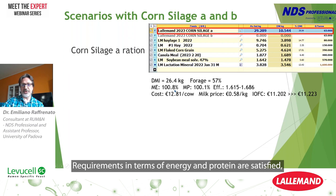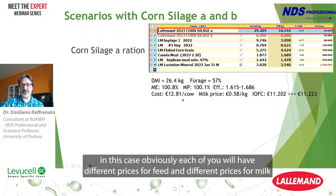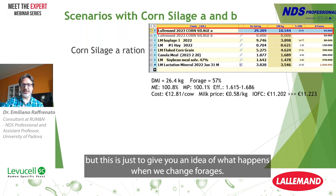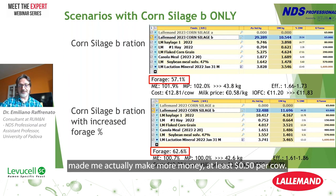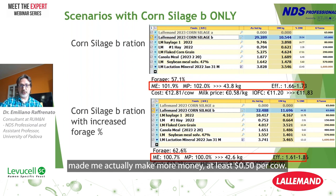Requirements in terms of energy and protein are satisfied. Obviously each of you will have different prices for feeds and a different price for milk, but this is just to give you an idea of what happens when we change forages. The increase of the forage percent actually made more money — at least 50 cents per cow.